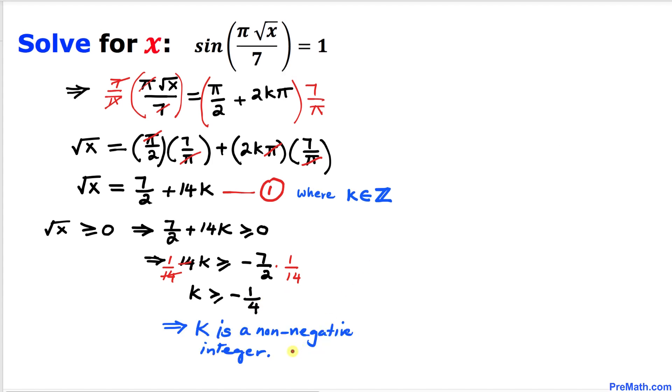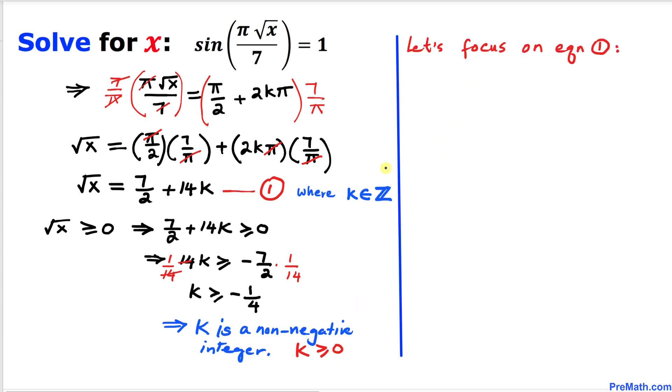Thus we conclude that k is a non-negative integer. In other words, k is greater than or equal to 0. Here's our next step: let's focus on equation 1.